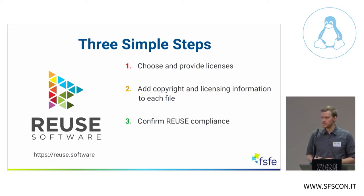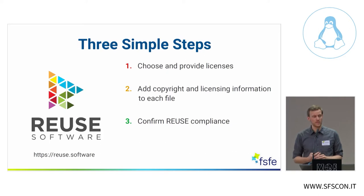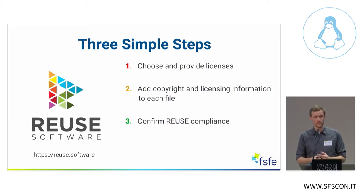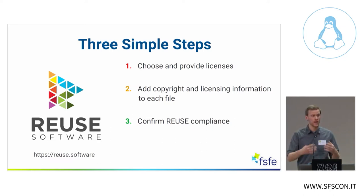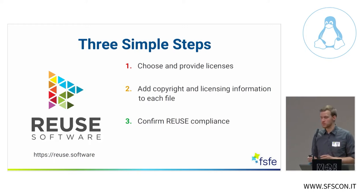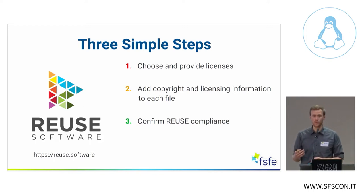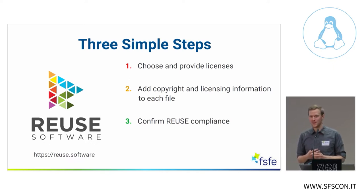The three simple steps are: first, choose and provide the license texts, settling on a license and providing the full license text. Then the more complicated part — add copyright and licensing information for every file, for which we have a number of options. And the third step is to confirm whether your project is REUSE compliant. If not, you go back to step two.